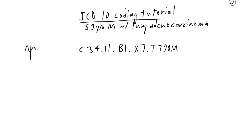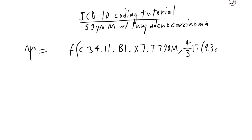This will be a function of the base code as well as the size of the tumor or disease process. In this case, I will use the equation for volume of a sphere — 4/3 π r³. This tumor was 4.3 centimeters.